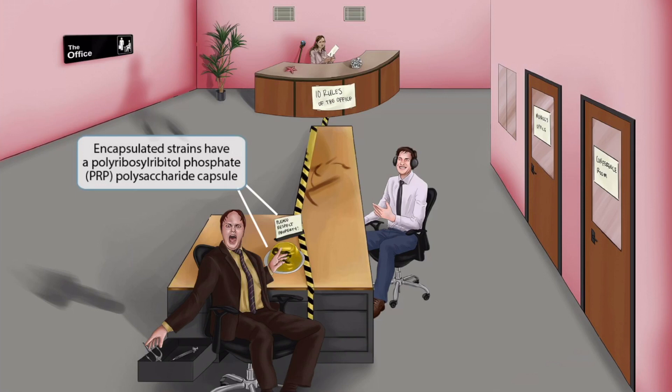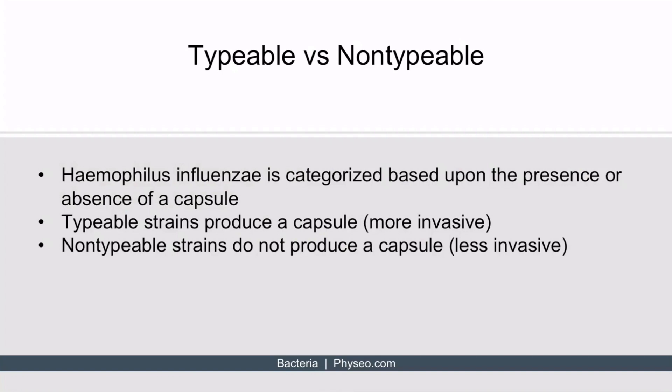Let's take a step back to discuss how Haemophilus influenzae is classified. H. flu is classified into two categories based upon whether or not the organism produces a capsule. If the organism does produce a capsule, it's further classified based upon the antigens within the capsule, and these are called typable strains. If the organism does not produce a capsule, then it's referred to as a non-typable strain.